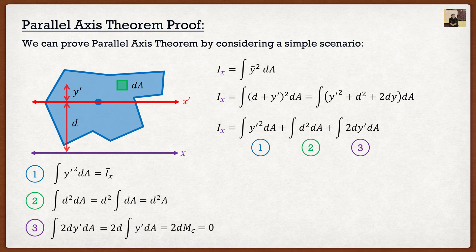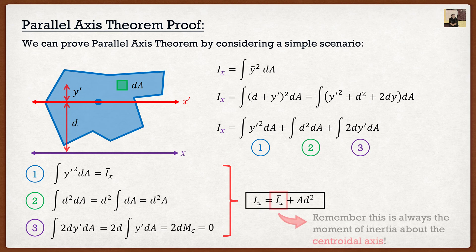Because everything balances, the summation is equal to zero. So the moment of inertia about the x-axis equals the moment of inertia about the centroidal axis plus A times d squared. This is very important: the first term will always be the moment of inertia about the centroidal axis. If we were to take the moment of inertia at some other spot, the third integral would not balance and would be non-zero. This formula only works because we are taking the moment of inertia about the centroidal axis.